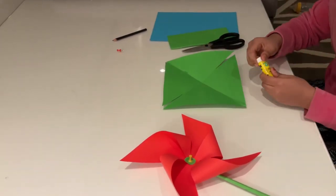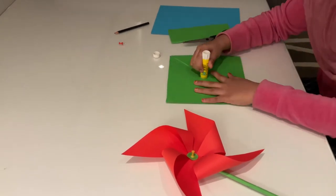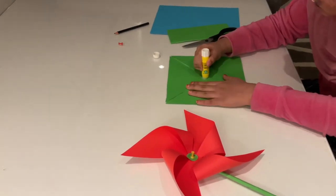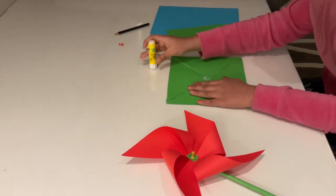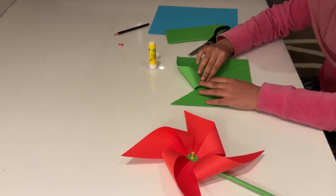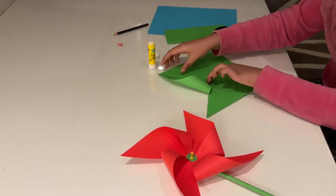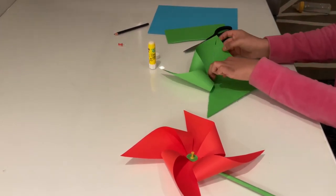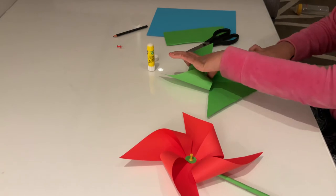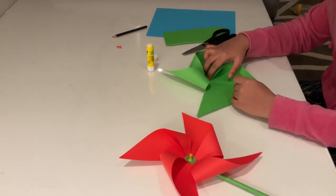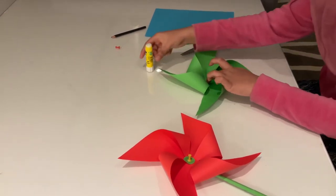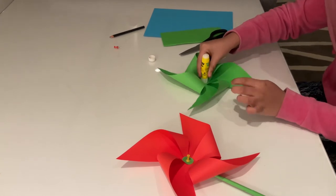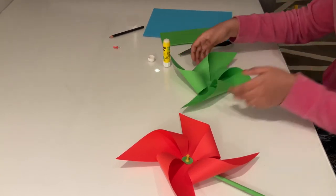Take one side and take a glue or fevicol. You can take whatever glue you need and just apply the glue in the middle. Now fold one side and the other side and then other side. Put the glue in the middle so that it won't come out.